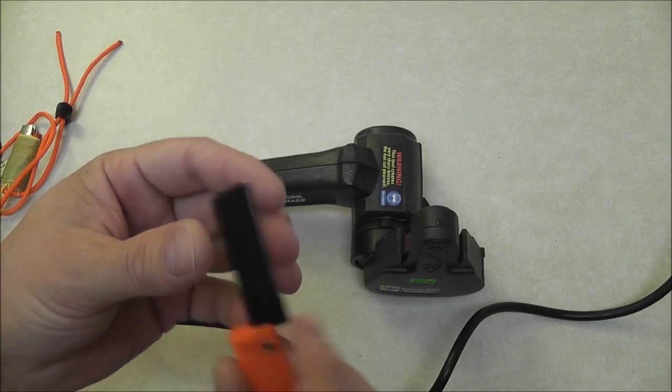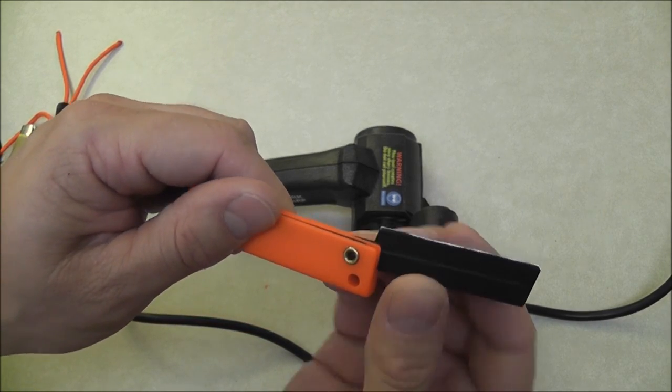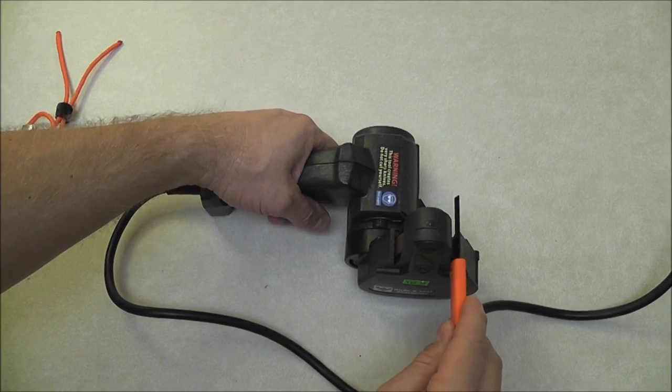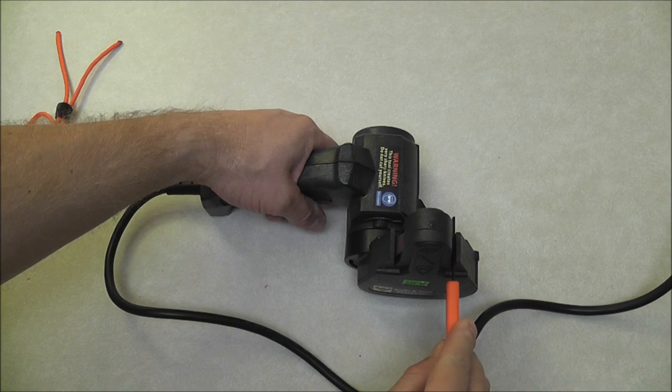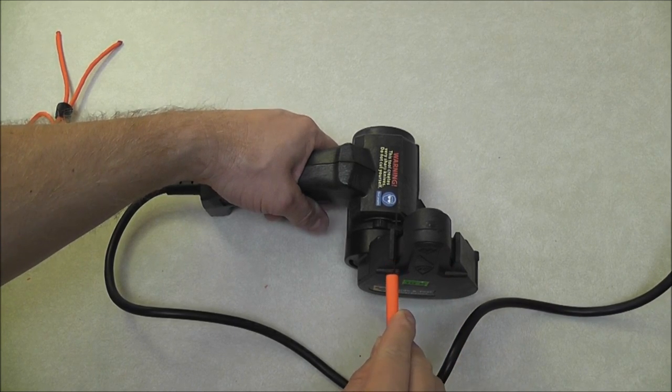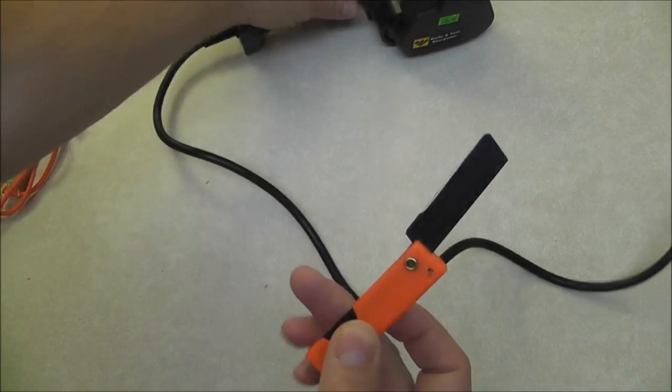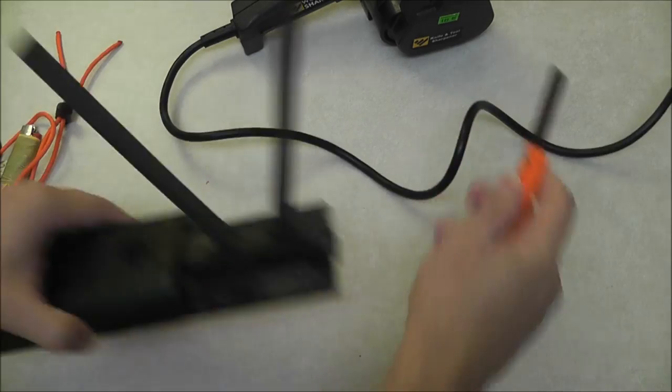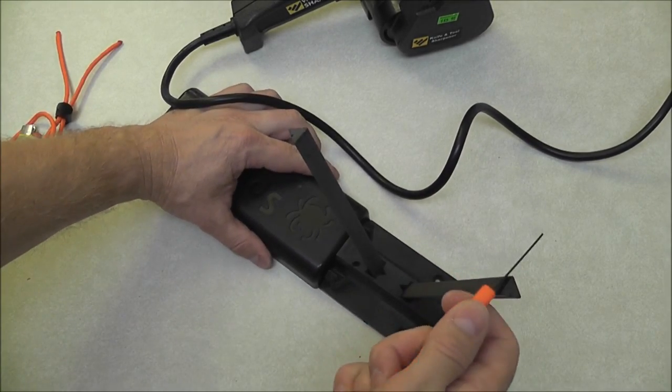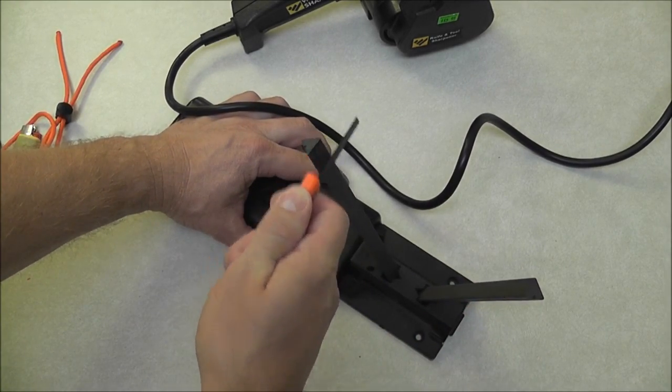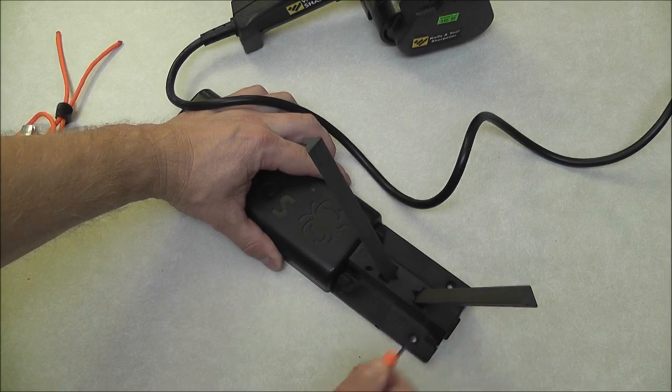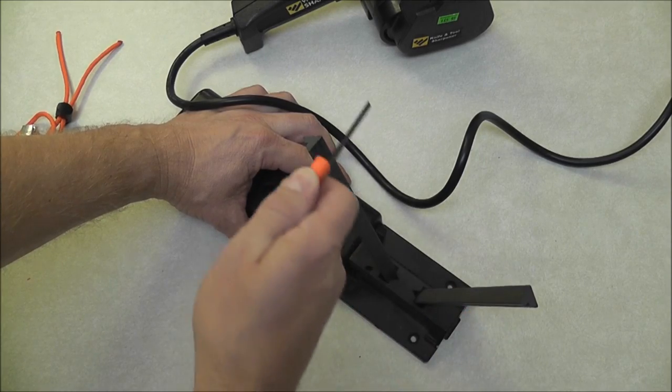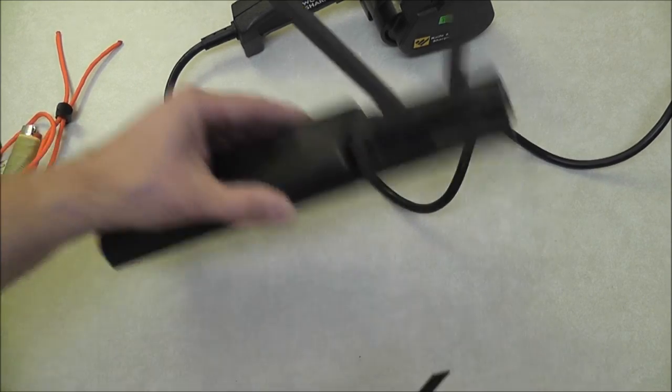This is the WorkSharp medium grit. Actually, it looks like that might have done it. Let's give it one more sweep here. I think I missed right there. Yep, it's definitely hitting it. Now, let's give it a quick whisk here on the Sharp Maker. All right, let's see what that does.